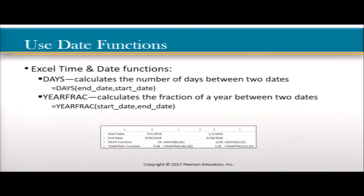Here are some examples of Excel date and time functions. DAYS calculates the number of days between two dates, starting with the end date and then the start date. Here they have an example of the DAYS function — equals DAYS, B2 comma B1. It took September 30, 2018 as B2 and September 1st, 2018 as B1, and said there were 29 days between them.